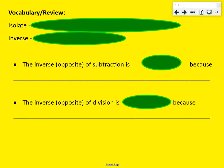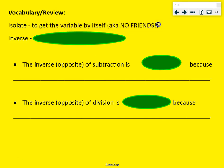Our learning target is how can I write and solve one step and two step problems. Vocabulary slash review. We have isolate, which means to get the variable by itself. We want the variable to have no friends. And remember that your variable is a letter, which we usually use x, but it can change. It can be different.